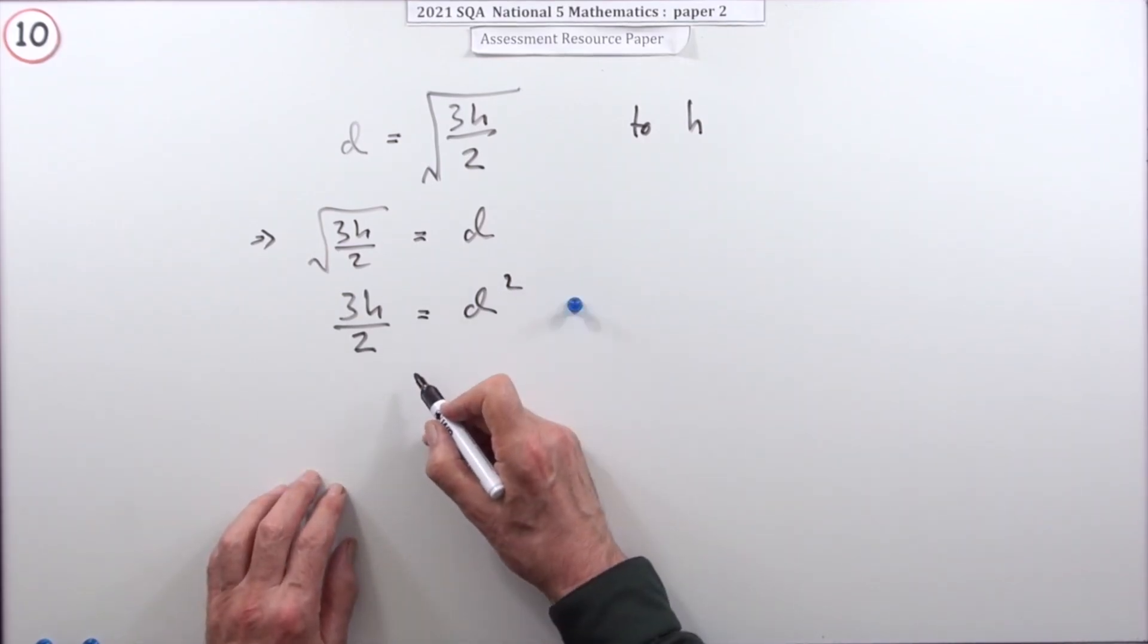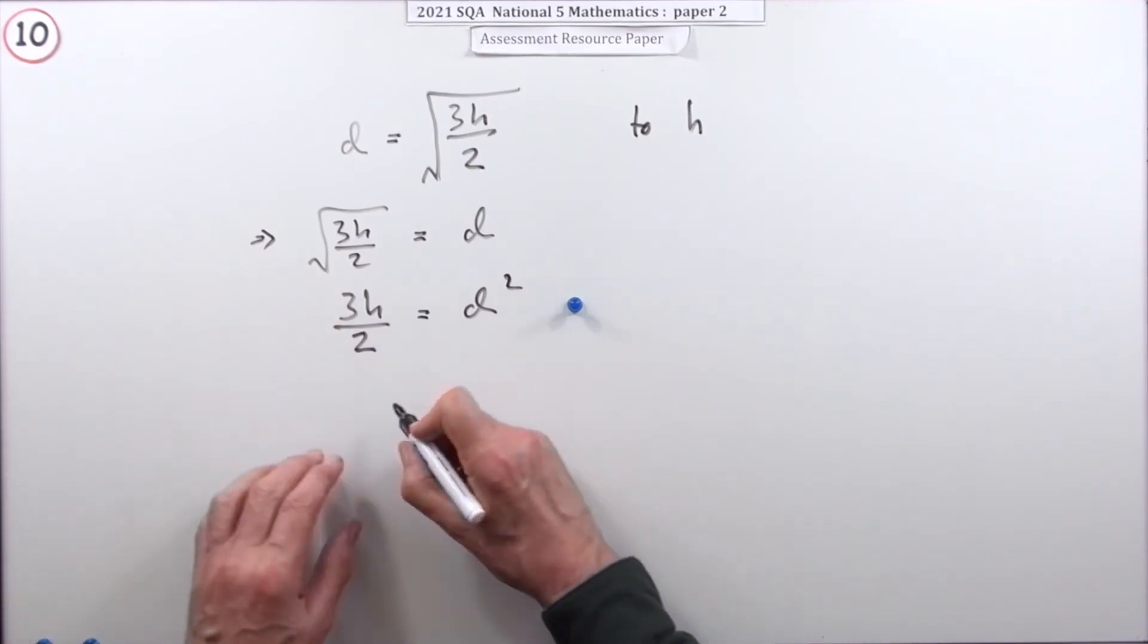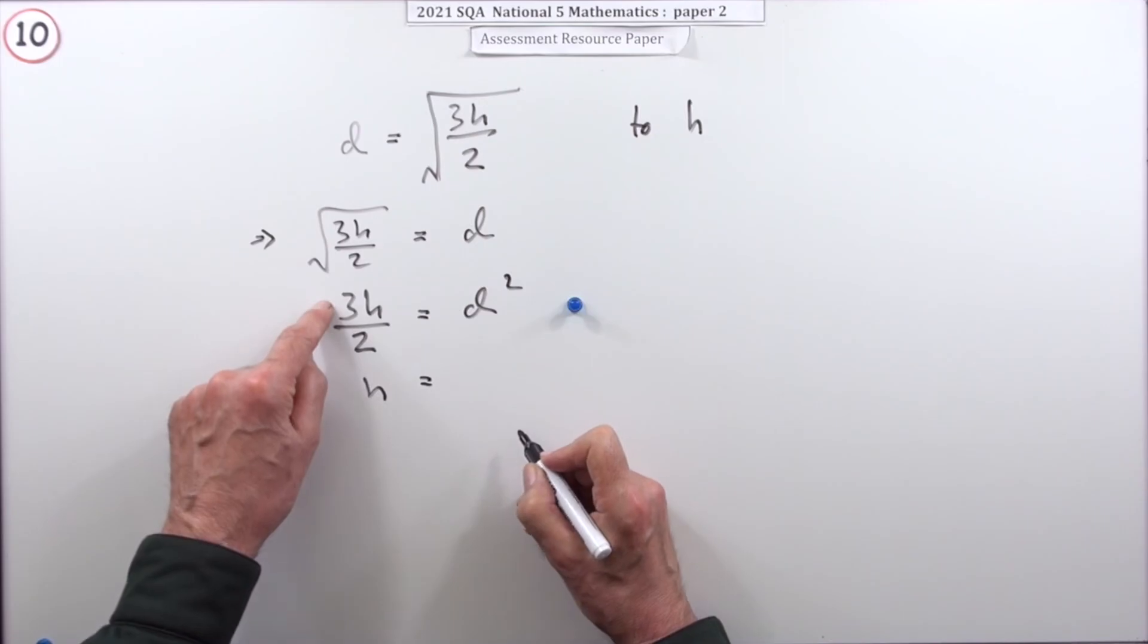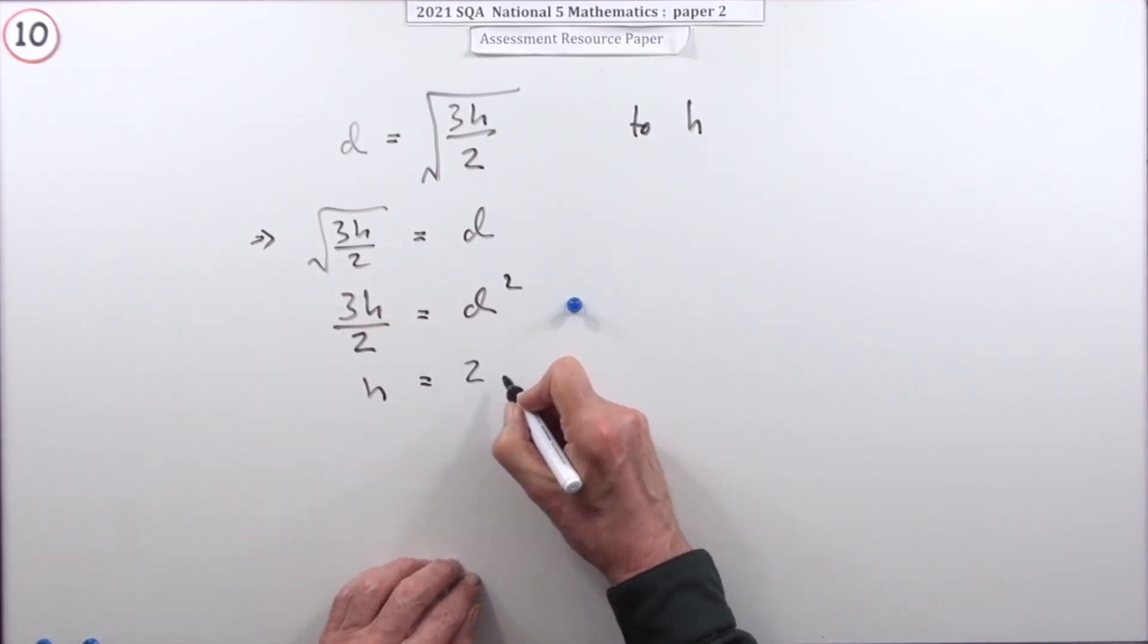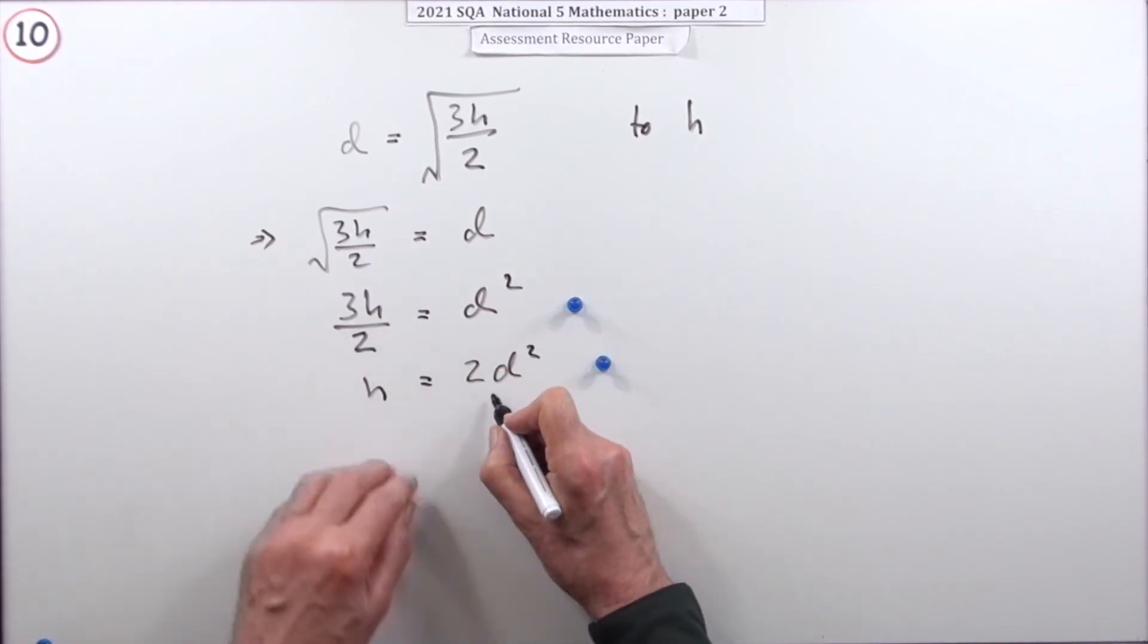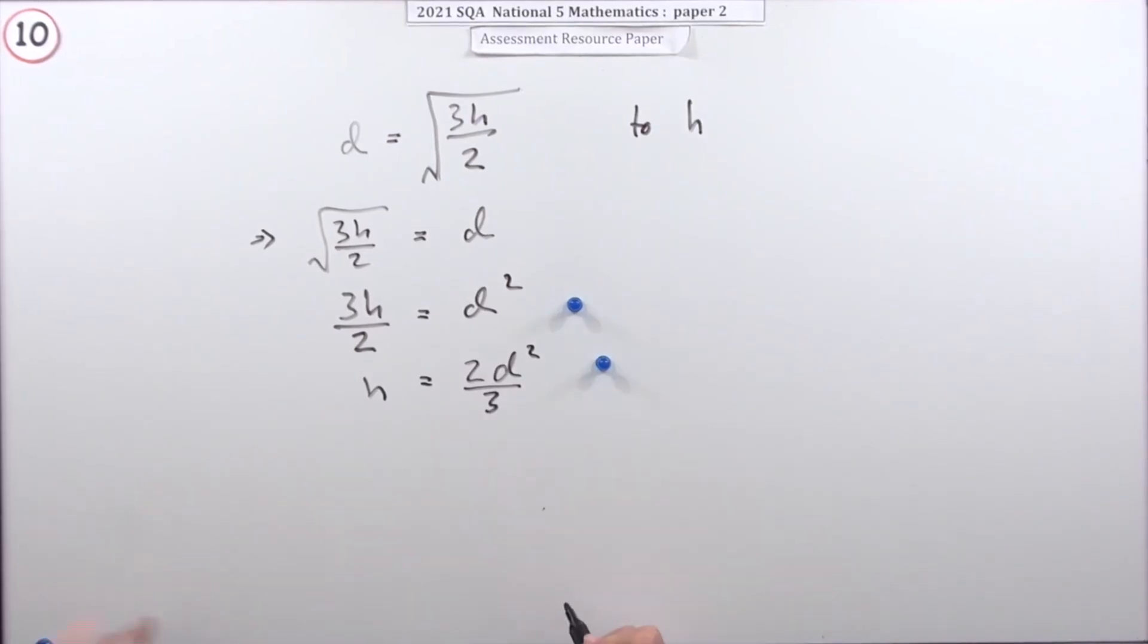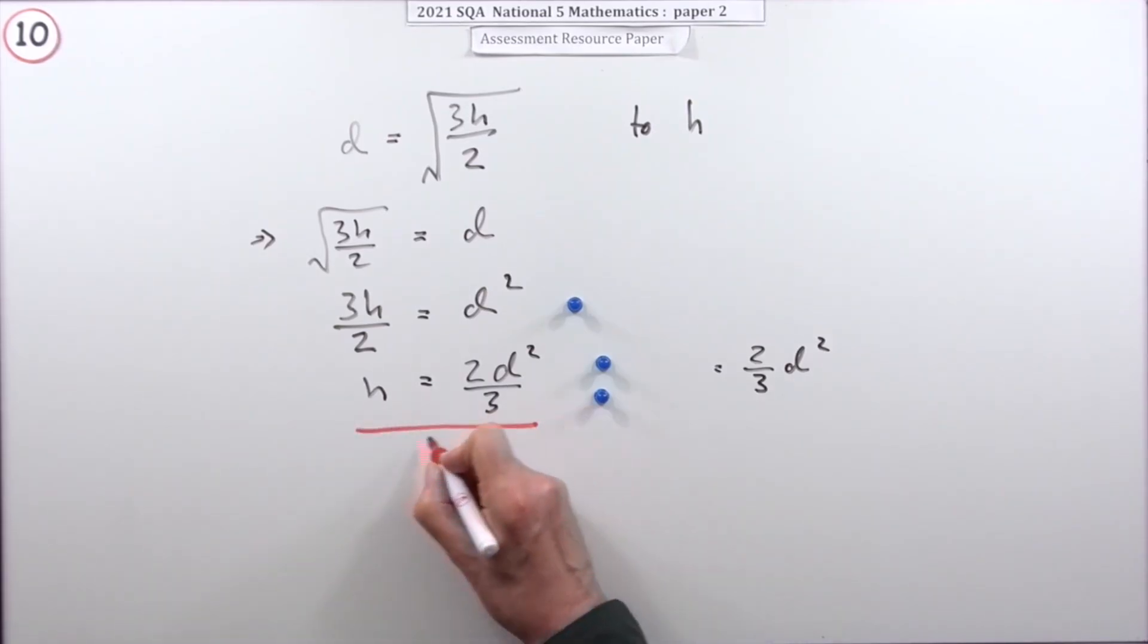Next, it's giving you two marks - one for getting rid of the three, one for getting rid of the two, but you'd do that together. Take the two across and multiply: two d squared. You get a mark for that. Then take the three across and divide: two d squared upon three, for three marks. Or you might want to write that as two thirds of d squared. That was very easy.